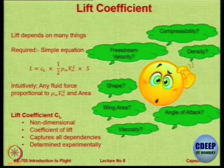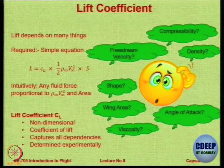Let us say there are two fluids, one with density rho 0 and one with density rho 1 — everything else remaining the same. The lift generated will be more if rho 1 is greater than rho 0. Similarly, the same body at different velocities will generate different amounts of lift. So intuitively we know that the force will be proportional to rho infinity, V infinity squared, and area.